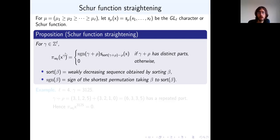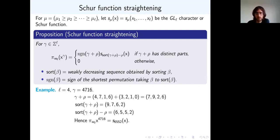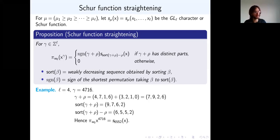If you feed it x^γ for a general γ in Z^L, you get a Schur function or zero up to a sign. For example, given γ = (3,1,2,5), you add the rho vector (3,2,1,0), and if there's a repeated part you get zero. Otherwise, as with γ = (4,7,1,6), you add rho, sort the result to get (9,7,6,2), subtract rho, and that's the resulting Schur function — together with a sign measuring how many transpositions were needed to sort.